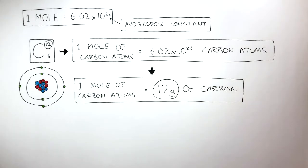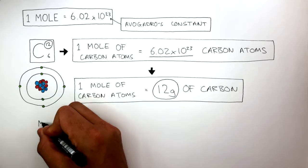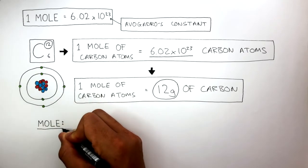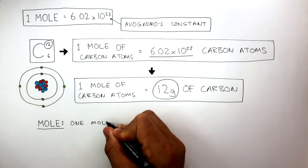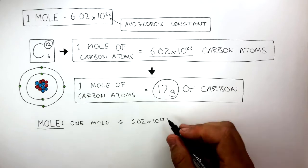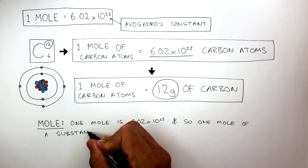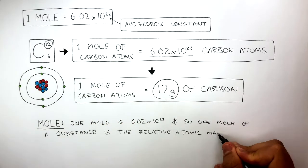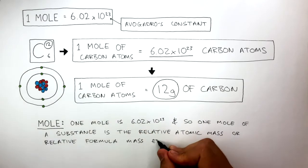This diagram represents the electronic configuration of a carbon atom. The nucleus contains the protons and neutrons, and it's these protons and neutrons which cause the mass of 1 carbon atom. This is why the mole is so important: 1 mole is 6.02 times 10 to the power of 23, and so 1 mole of a substance is the relative atomic mass or relative formula mass expressed in grams.